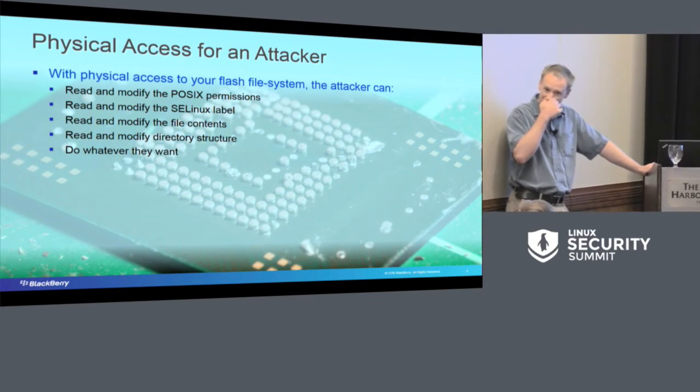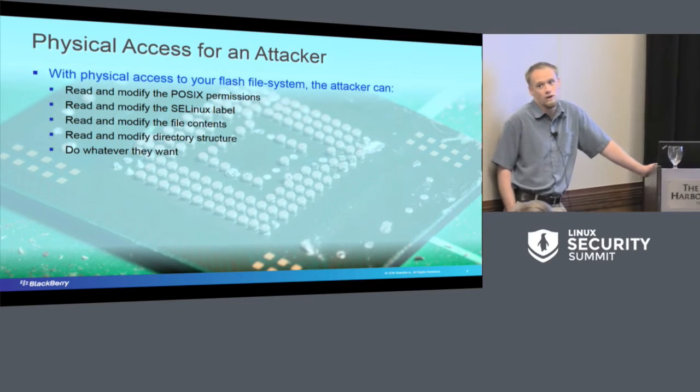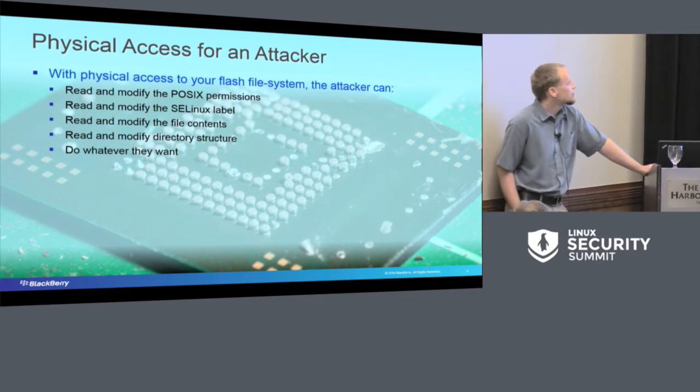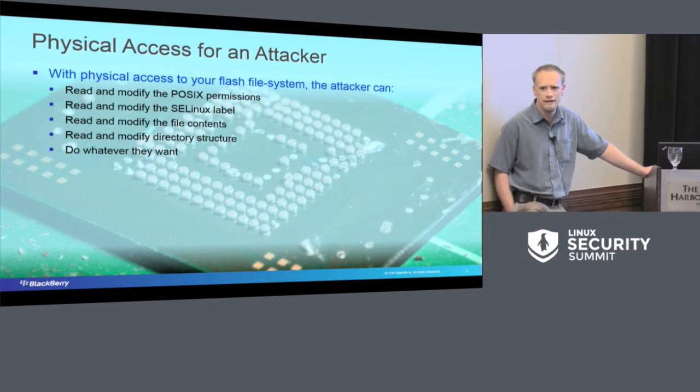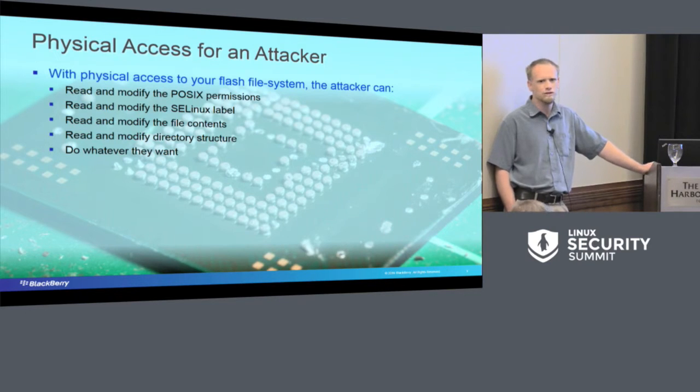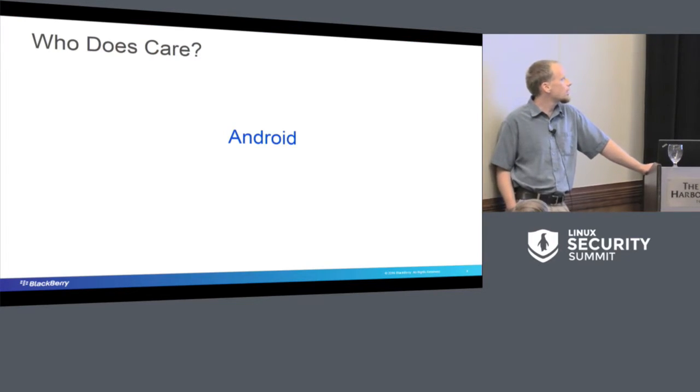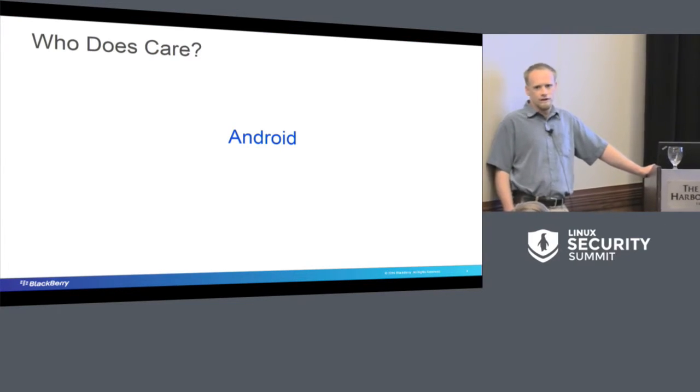So let's take a look. What can an attacker do if they get physical access to your system? Well, if your file system isn't encrypted, they can do a whole lot. They can basically do whatever they want. They can read and modify the POSIX permissions, read and modify any of the SE Linux labels on the file system, file contents, directory structure. This isn't new, we all know this. This is why we encrypt our file systems. This is why we use things like DM Verity.